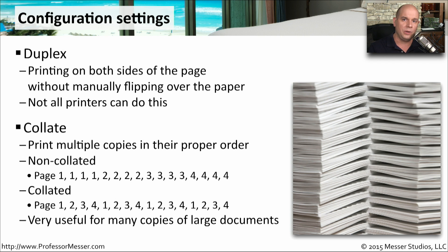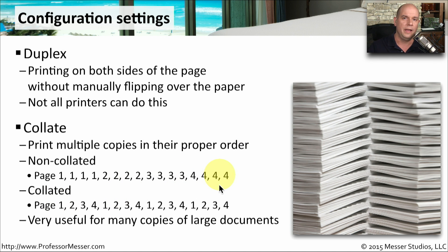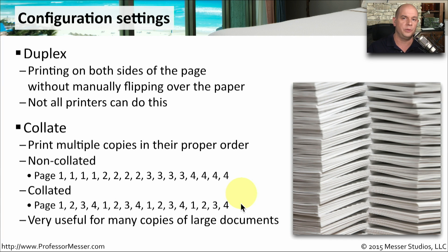For example, a non-collated printer might print all of page 1, then all of page 2, then page 3, then page 4. But with collation turned on, it prints pages 1-2-3-4, then 1-2-3-4, and so on for each copy. You can simply take the pages off of the printer and everything is already in the proper order.